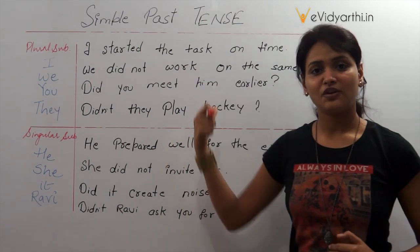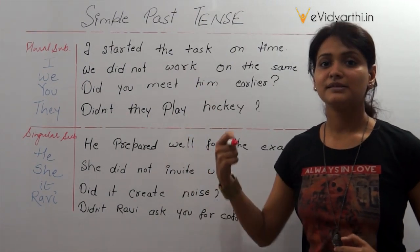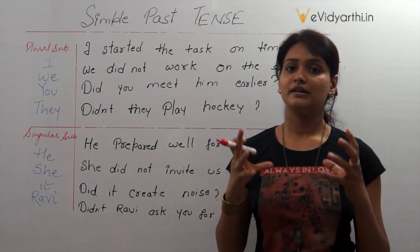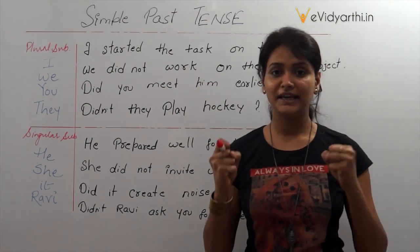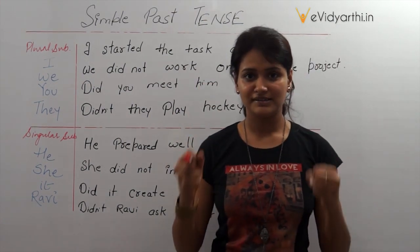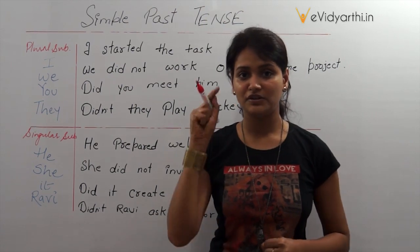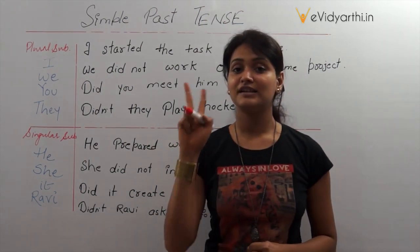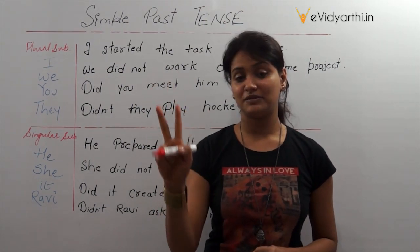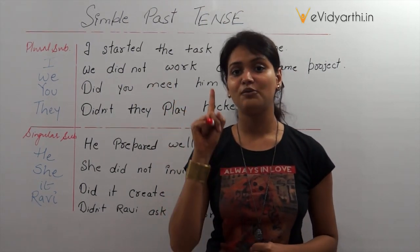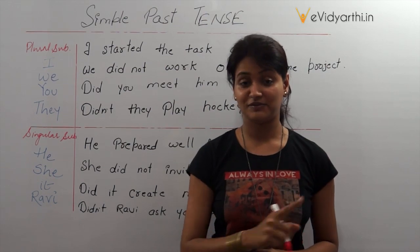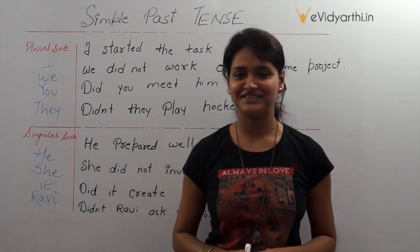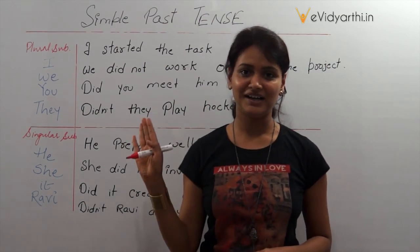So that was all about simple past tense. 'Did' is a big game player in simple past tense. When you are using 'did', never use the second form of the verb — it is always the first form of the verb. That's all for the lesson. Bye bye.